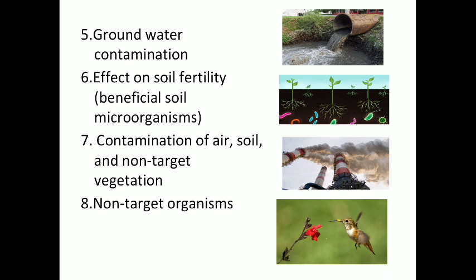This also causes loss of chemical due to drift. In the case of non-target organisms, they harm plants, animals, fish, and birds. For example, chloropyrifos is a common contaminant and it is highly toxic to fish, killing fishes near the waterways.